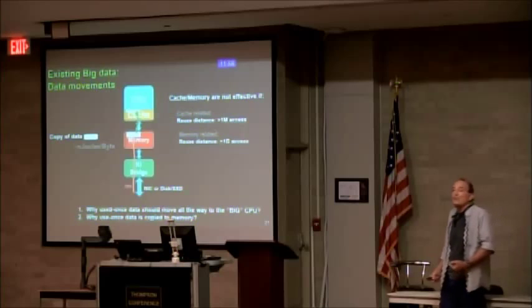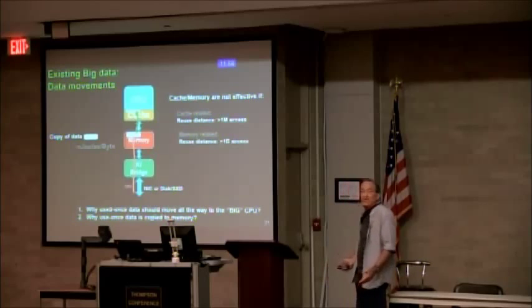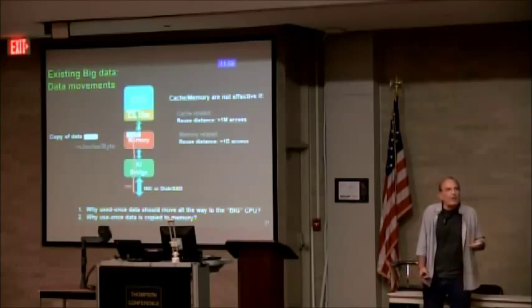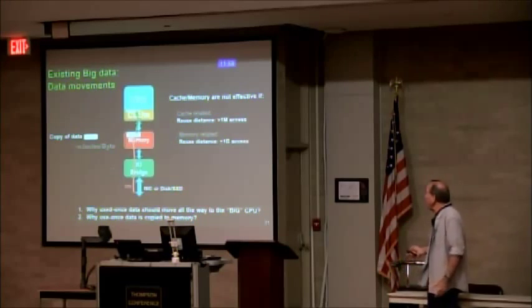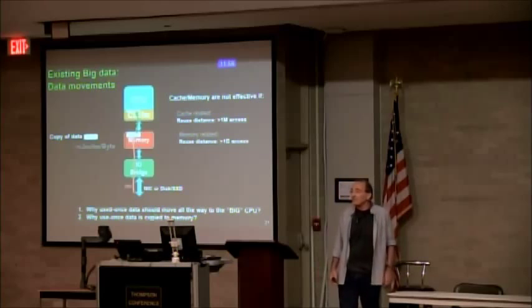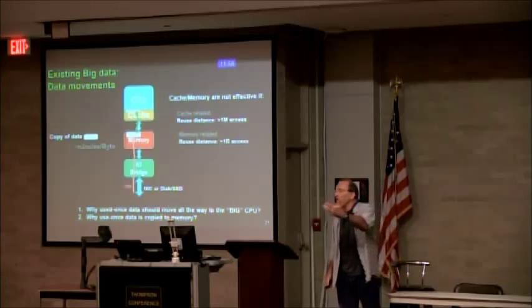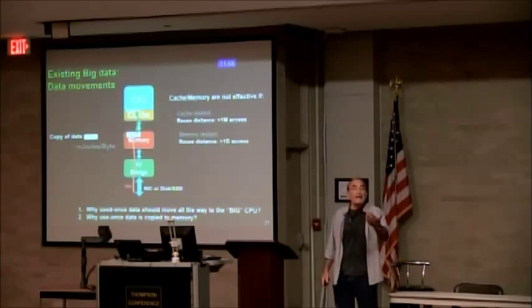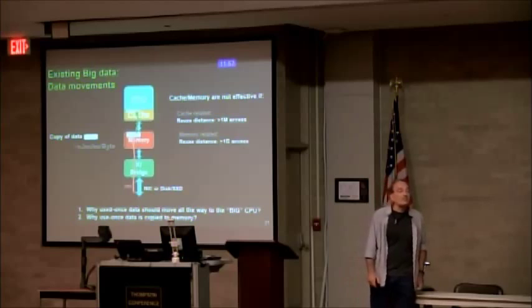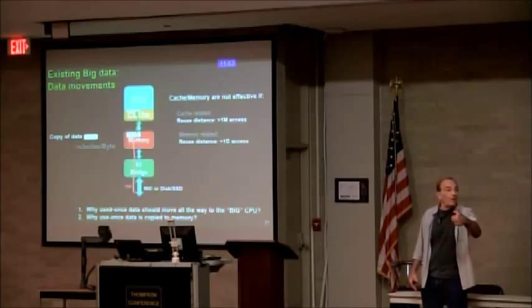So, the minute the reuse distance is huge, it doesn't make sense to use cache at all. But if we go now and look at memory, the same thing applies for memory. Memory is a cache, right, on a page basis. So, now, if the reuse distance is more than one giga accesses or several giga accesses, the data won't exist in the memory when I want to reach it again. Okay? And definitely in the cases that I do read once. So, the minute the reuse distance is several giga accesses, it's the same as read once, that I have it only once, reading only once.